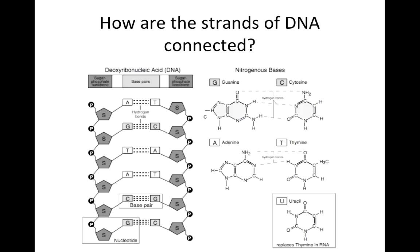Notice that there is a fifth nucleotide, uracil, that is shown on the bottom right. Uracil replaces thymine in RNA, but it is not present in DNA.